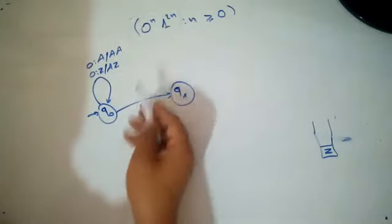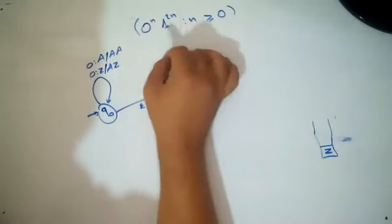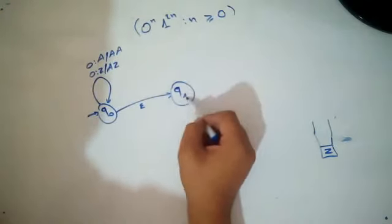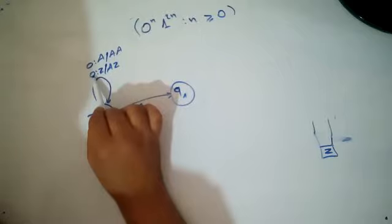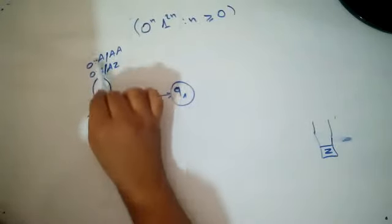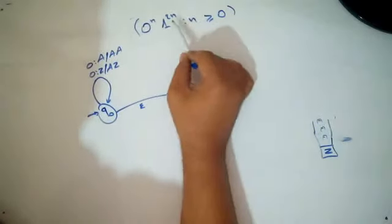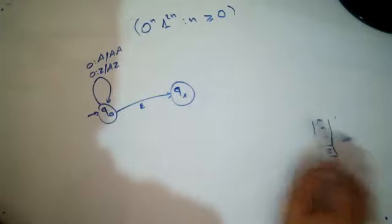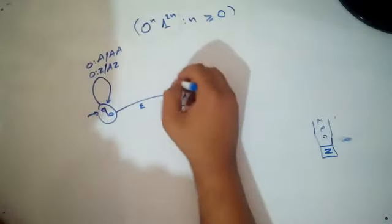We can also move to q1 without reading the input — that's an epsilon transition. The input is our language: zeros and ones. In q1, when I read a 1, I want to consume two ones for each A on the stack.